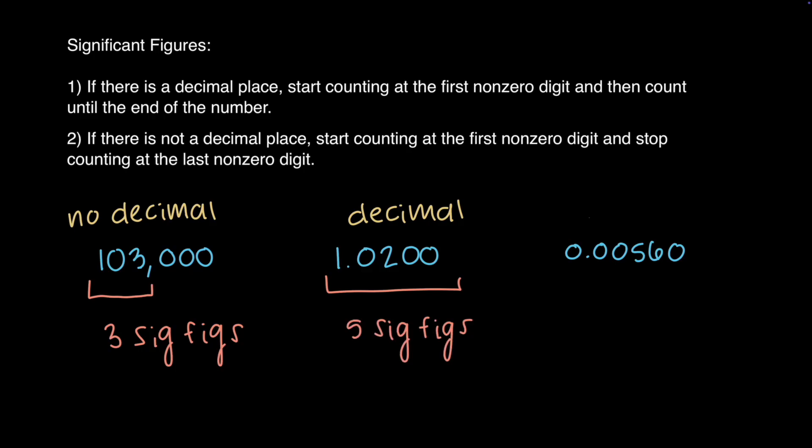For 0.00560, there is a decimal place, so I will start counting at the first non-zero digit and count until the end of the number. Scanning from left to right, 5 is the first non-zero digit, and then I count until the end of the number. This value has 3 sig figs.